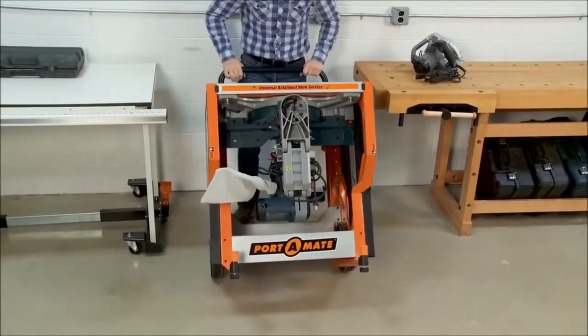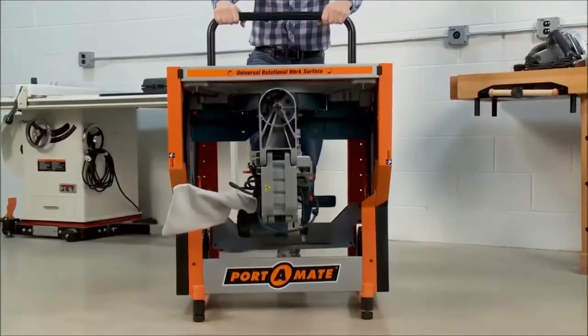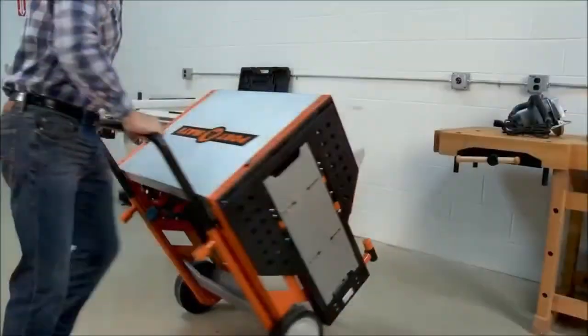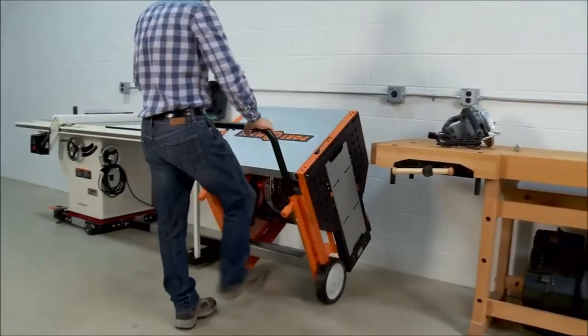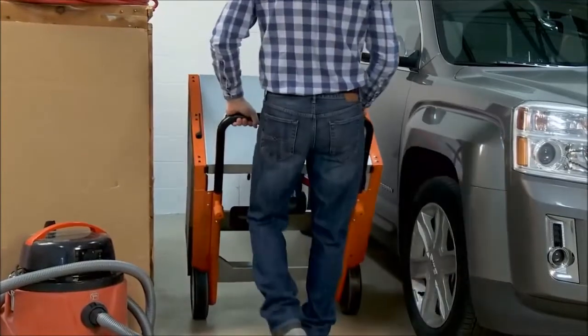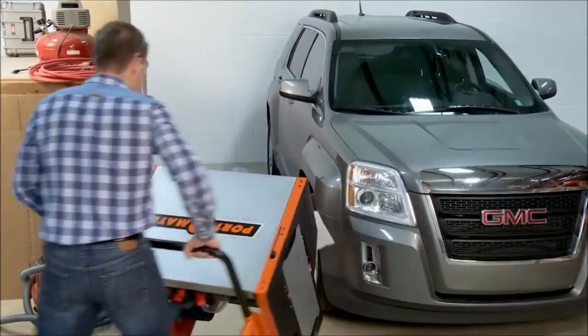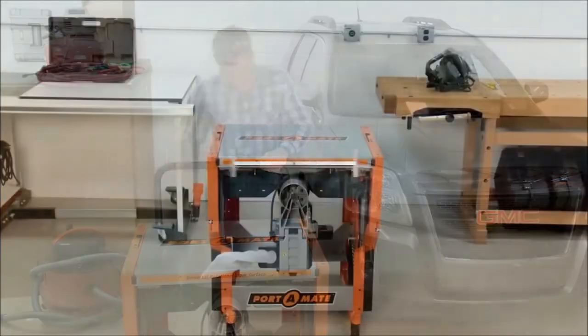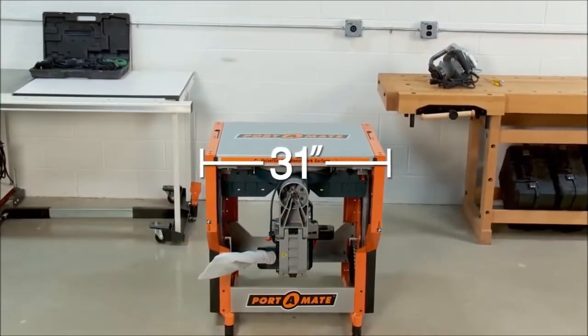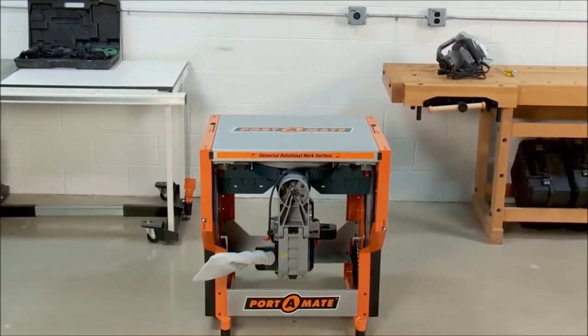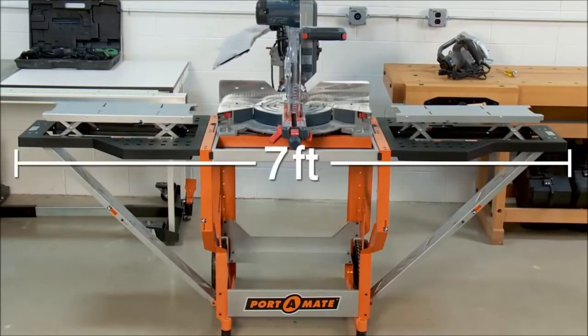Introducing the Portamate PM8000 Portacube STR, the revolutionary portable workstation and storage center designed to get the most out of your miter saw. Does it feel like every time you start a project you struggle to find space in your crowded workshop? The Portamate Portacube STR is your solution. The Portacube STR's compact footprint is uniquely designed for portable storage of your miter saw, and when fully expanded it provides up to seven feet of working surface.